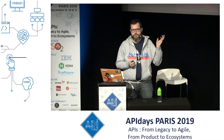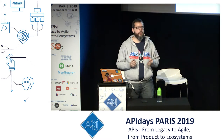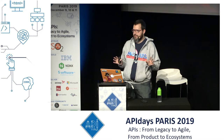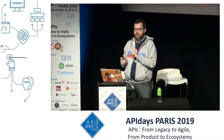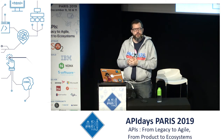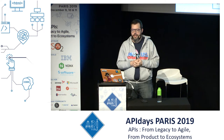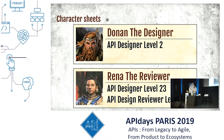Now what follows is purely fictitious and has never ever happened in any of the companies I've been working with — well, it may have happened, but not exactly like this. Let me introduce you to Donan the designer and Rina the reviewer. Donan is a level 2 API designer and Rina is a multi-class character, which is both level 5 API design reviewer and level 23 API designer.